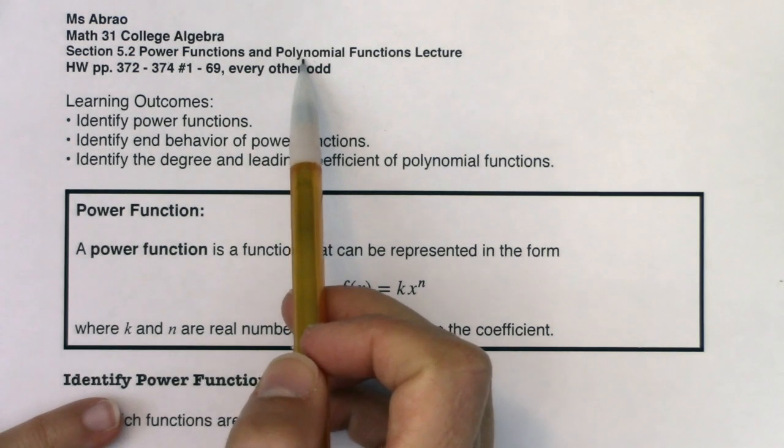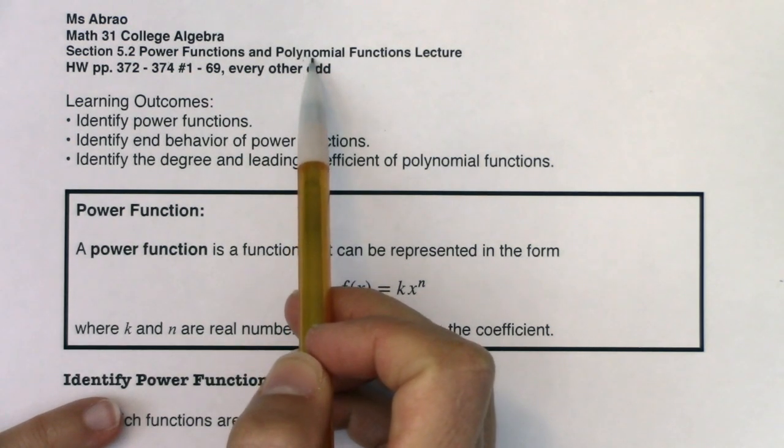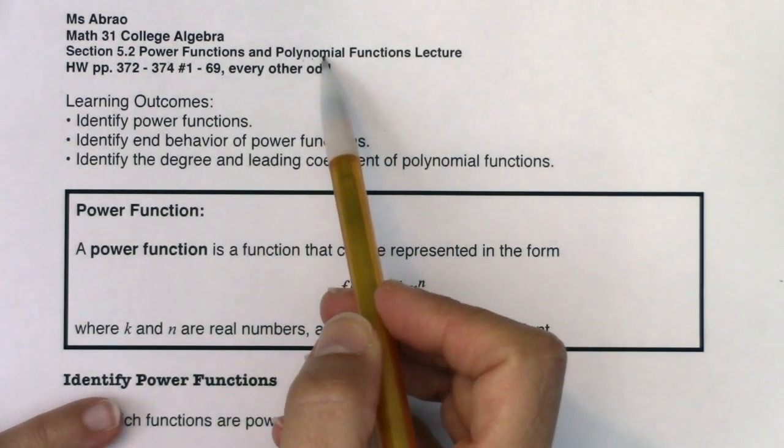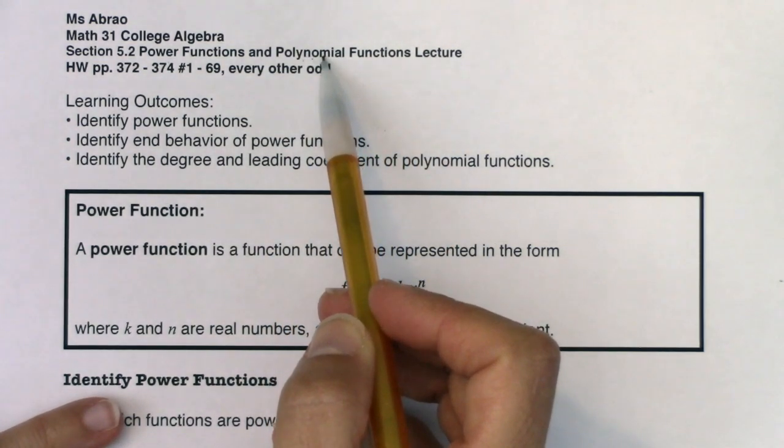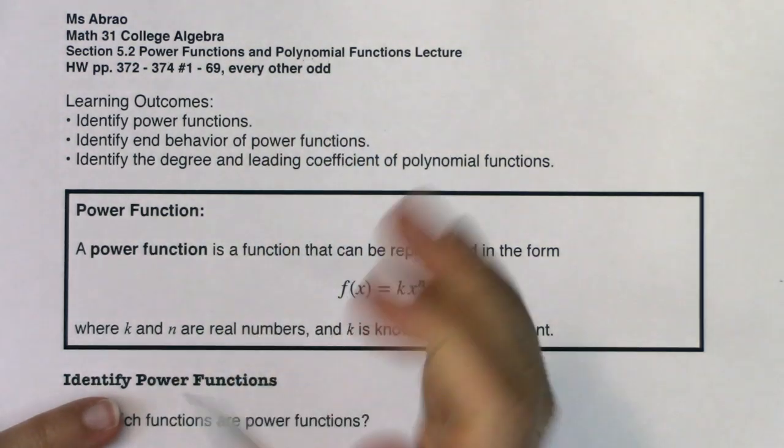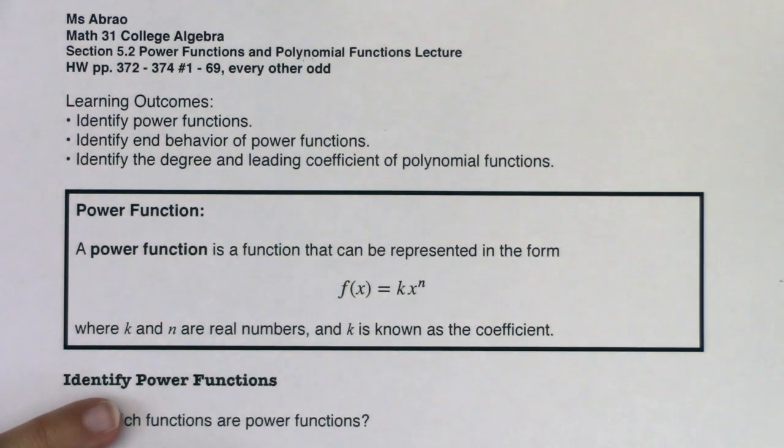We'll start with powers and then move on to polynomials. You've actually already done a couple of polynomials. Linear functions are a subset of polynomial functions, and all of those quadratic functions we just talked about in 5.1 are a certain type of polynomial function. So you've seen degree one and degree two polynomials before. In chapter five, we're really going to expand beyond just linears and quadratics.